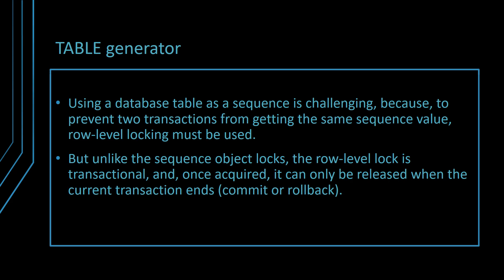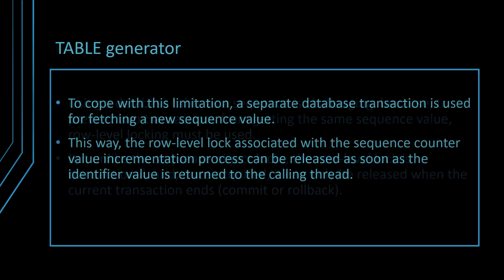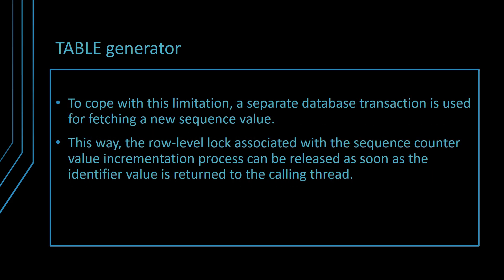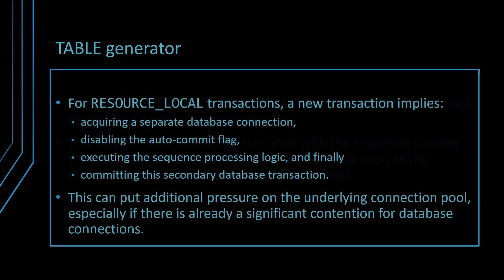But unlike the sequence object locks, a row-level lock is transactional, and once acquired, it can only be released when the current transaction ends, either by issuing a commit or a rollback. To cope with this limitation, a separate database transaction is used for fetching a new sequence value. This way, the row-level lock associated with the sequence counter value incrementation process can be released as soon as the identifier value is returned to the calling thread. For resource-local transactions, a new transaction implies acquiring a separate database connection, disabling the auto-commit flag, executing the sequence processing logic, and finally committing this secondary database transaction. This can put additional pressure on the underlying connection pool, especially if there is already significant contention for database connections.